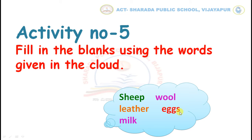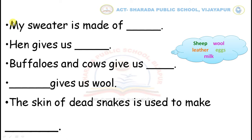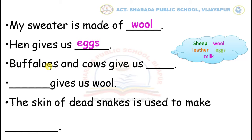Use these words to fill in the blanks. My sweater is made of wool. Hen uses eggs. Buffaloes and cows give us milk.